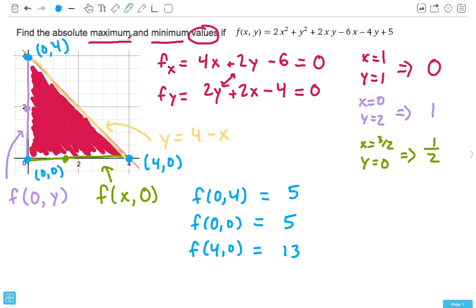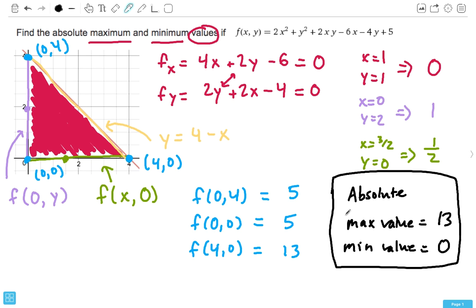So, we can see that our absolute max value equals 13, and our absolute min value is 0, and that is how you solve this problem. Make sure you don't put in the points instead of the values. It's very important that you carefully read through the question because you can lose points that are very trivial just because you didn't read the question. But, yeah, 13 and 0.